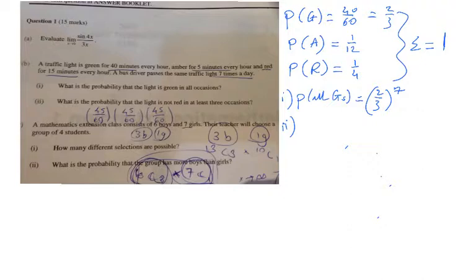Part II: What is the probability that the light is not red in at least three occasions? We want something, and we want it at least three times. What is that something that we want? Well, what we want is that it is not red.